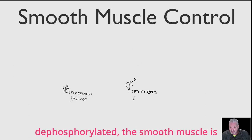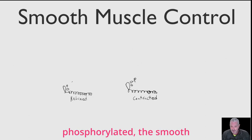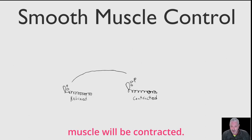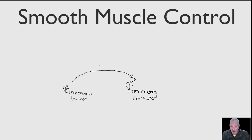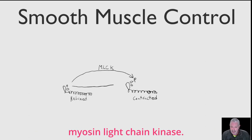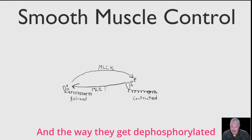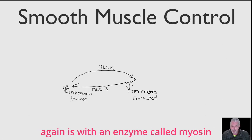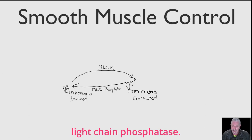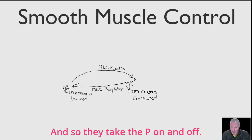When the light chains are dephosphorylated, the smooth muscle is going to be relaxed, and when the light chains are phosphorylated, the smooth muscle will be contracted. The way the light chains get phosphorylated is with an enzyme called myosin light chain kinase, and the way they get dephosphorylated again is with an enzyme called myosin light chain phosphatase — they take the phosphate on and off.